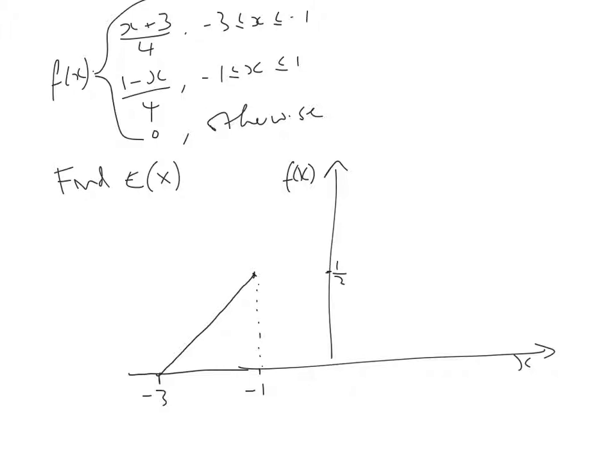And then the second part of the PDF, I'm going to substitute minus 1 into the function. 1 minus minus 1 is 2 over 4, which is a half. And then 1, substitute that in for x, 1 minus 1 is 0. So at 1, the height of the graph is 0. So it's going to be another straight line down. And so we know that the expectation of x, in this case, is minus 1. And that's from the symmetry of the graph.